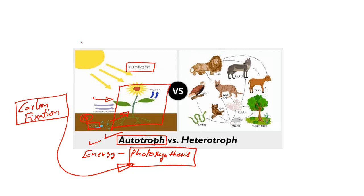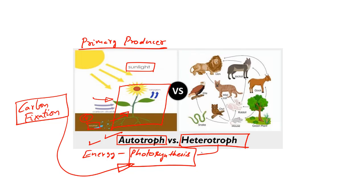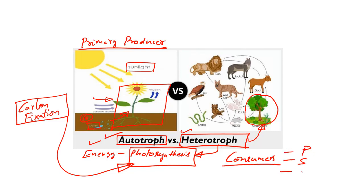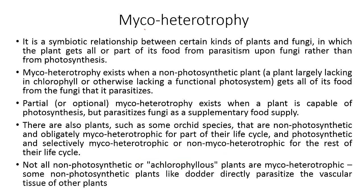As a result, an autotroph is also referred to as a primary producer. On the other hand, a heterotroph cannot produce its own energy and cannot carry out photosynthesis. Heterotrophs draw their energy and nutrients by directly consuming the autotroph or the primary producer. So heterotrophs are also known as consumers, and they are classified into primary consumer, secondary consumer and tertiary consumer. Now let us understand what myco-heterotrophy is.